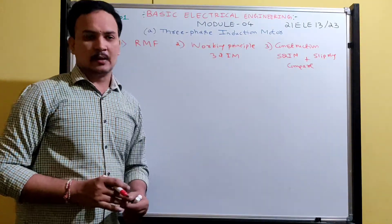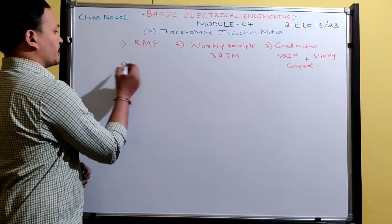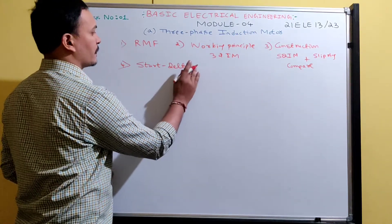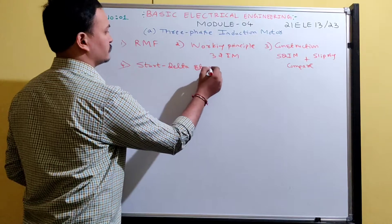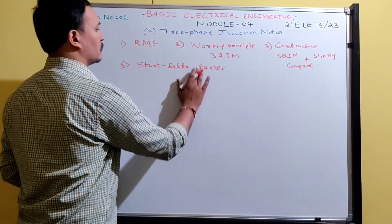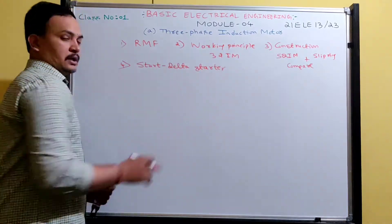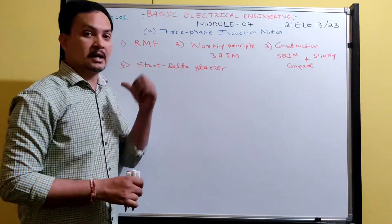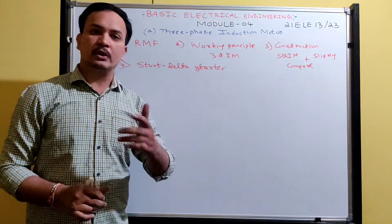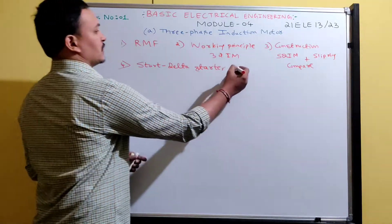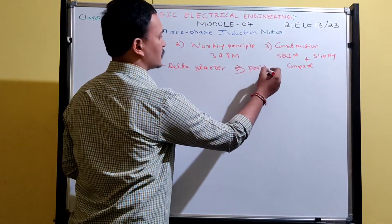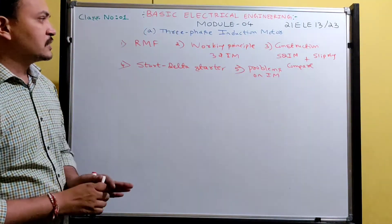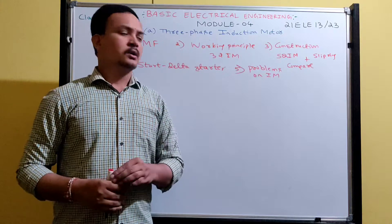We will also cover a comparison between squirrel cage and slip ring, as that is sometimes asked in the exam. The next fourth topic is the starter for the induction motor — the star-delta starter. This starter is very important to operate the induction motor; the starter plays an important role. We are going to learn why we use this starter with basic explanation, and along with this, the fifth topic will be problems on the three-phase induction motor.